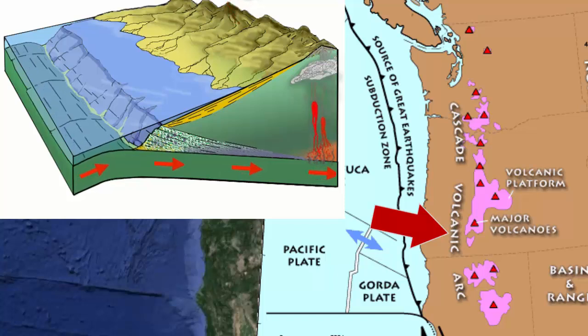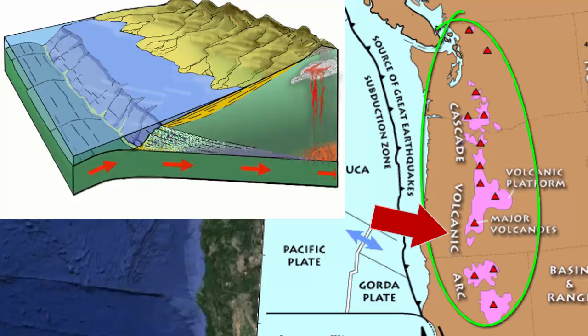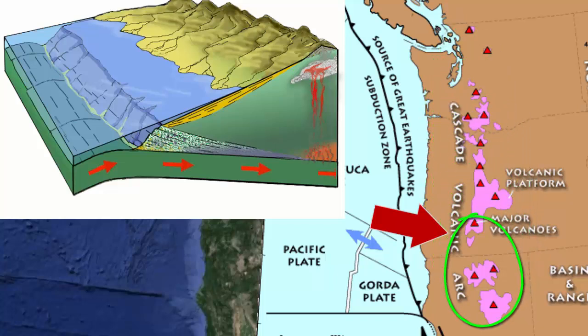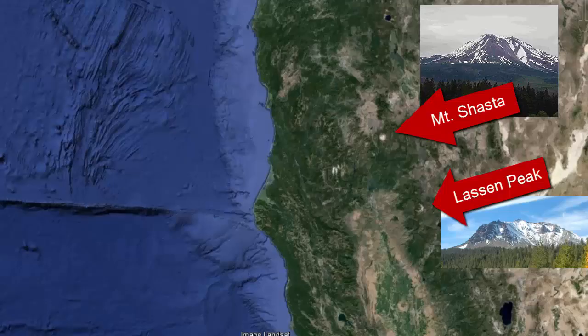Result? Subduction, a trench, earthquakes, and inland an active chain of volcanoes. This volcanic chain is known as the Cascade Mountains, and in California is expressed with the active volcanoes of Mount Lassen and Mount Shasta.